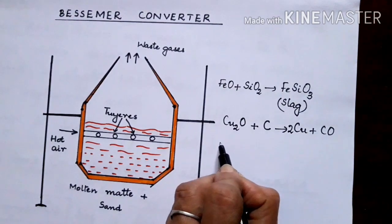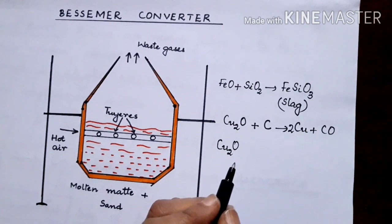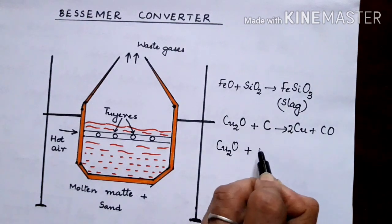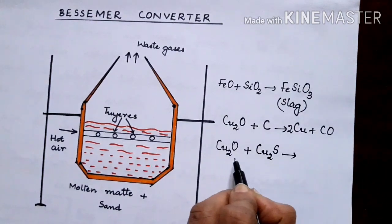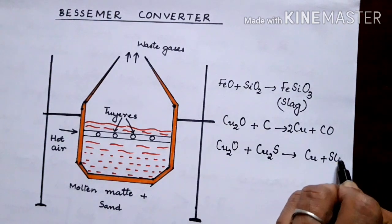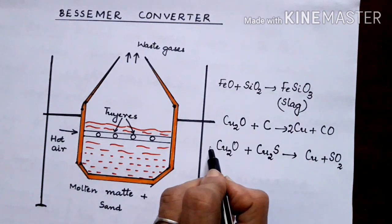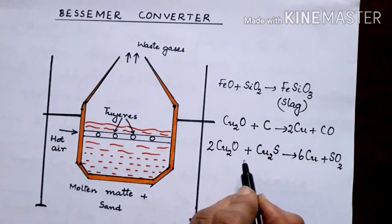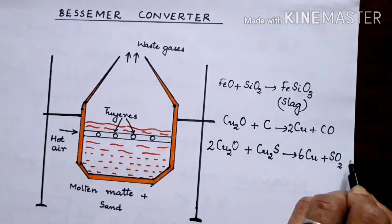Later, you find that some amount of Cu2O also combines with the unreacted Cu2S to form auto-reduction resulting in Cu and sulfur dioxide. So the final product formed here will be 2Cu2O plus Cu2S giving 6Cu plus sulfur dioxide.